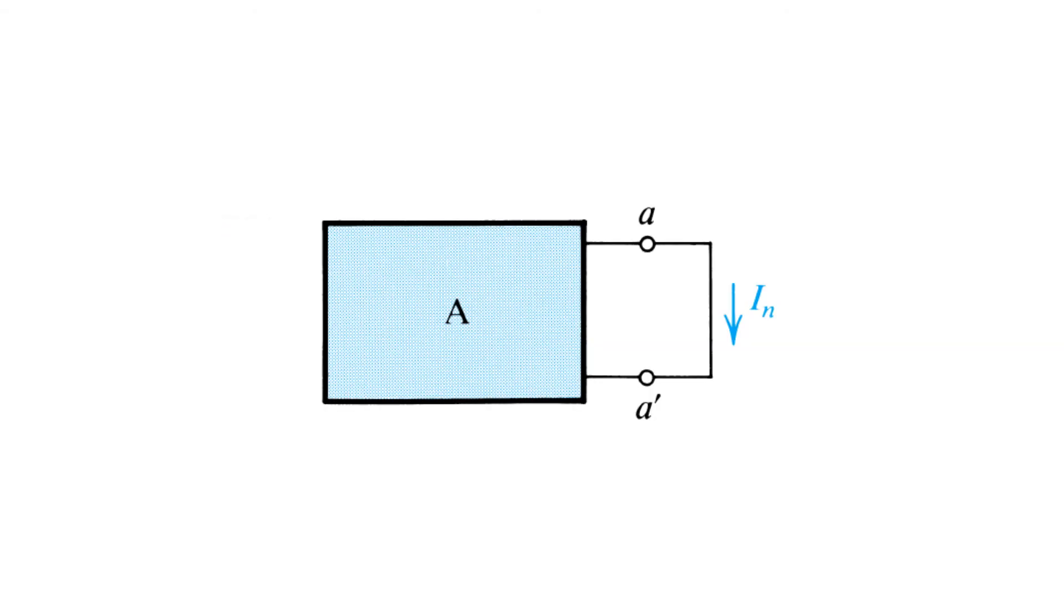In order to find the Norton equivalent, first we must find the current source value In. This is done by placing a short circuit between the two ports A and A prime of the linear two port A. With those two nodes shorted, we then find the resulting current In.